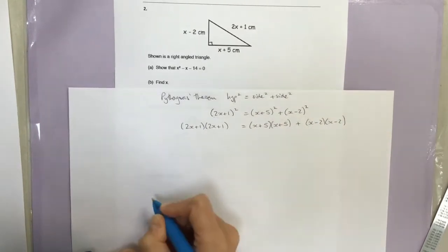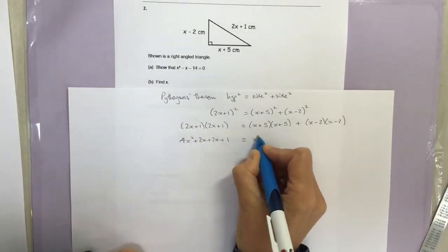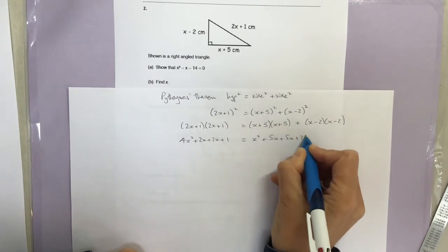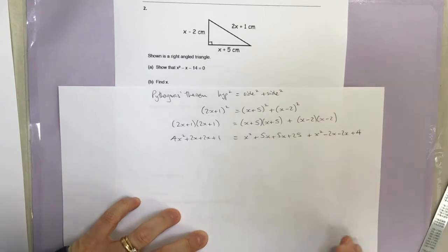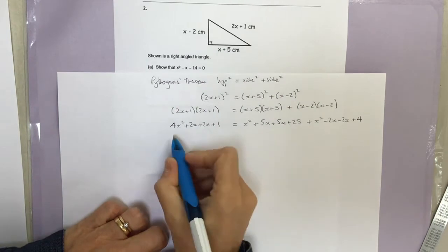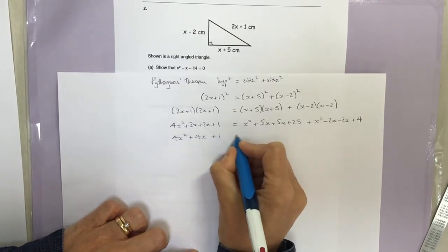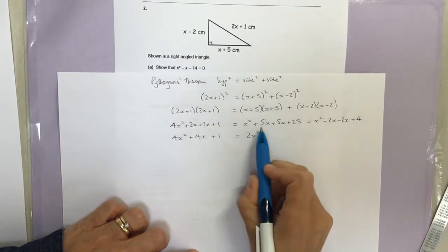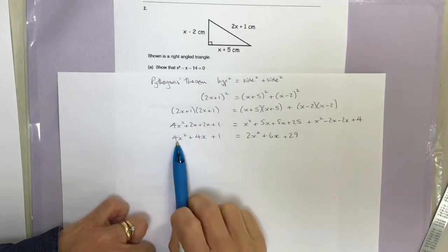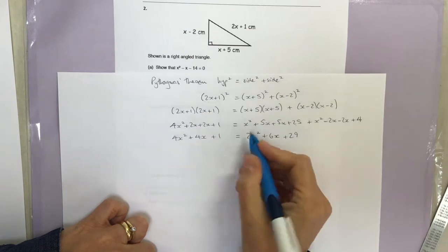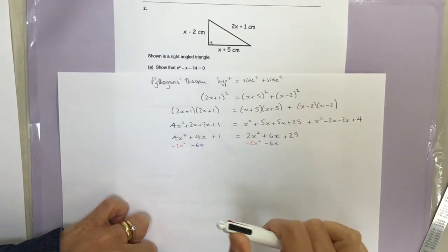Expanding using FOIL: (2x + 1)² gives 4x² + 2x + 2x + 1; (x + 5)² gives x² + 5x + 5x + 25; and (x − 2)² gives x² − 2x − 2x + 4. Now I collect like terms on each side. On the right: x squared terms give 2x², the x terms give 6x, and the constants give 29. Then I bring everything to one side, subtracting 2x², 6x, and 29.